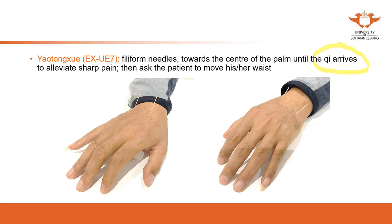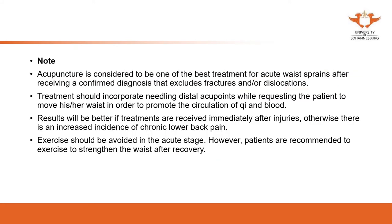After inserting the needles and achieving chi arrival — the patient may feel a distending or swelling sensation — keep the needle in place and ask the patient to move their waist: walk around, go upstairs or downstairs, or turn left and right. This technique is called 'needling with movement.' We also use this technique for frozen shoulder, inserting needles in the leg while asking the patient to move the shoulder.